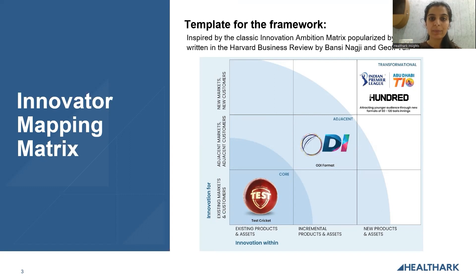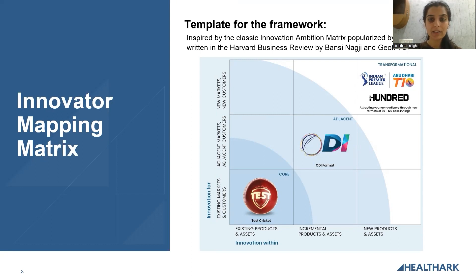To take a general example — and for our fondness of cricket — test cricket can be taken as the core capability. These companies can then extend from their core capabilities into an adjacent market with an incremental product, like the ODI format in this context. Most innovators adopt this strategy to stay in the game. When companies venture into adjacent markets and bring in new products or assets to cater to a completely new market and its customers, they ensure a transformational innovation, like IPL and T10 here.